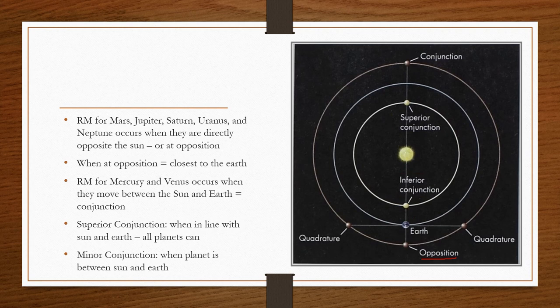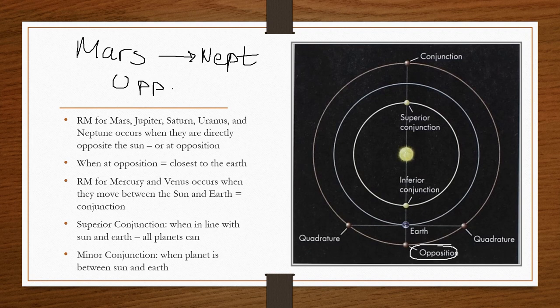Every planet can be in superior conjunction, which is when it's in line with the sun and the Earth, but the planet is on the far side of the sun. Only Mercury and Venus can be in minor conjunction and superior conjunction. So let's reiterate. Opposition: when we have everything from Mars to Neptune, they go on opposition, meaning they are in line with the Earth and the sun all at once. Planetary alignment with the Earth in the middle. Sandwich. Opposition: sandwich of outer planets, Earth, and sun. The Earth is the peanut butter and the jelly. The outer planets and the sun are the bread.